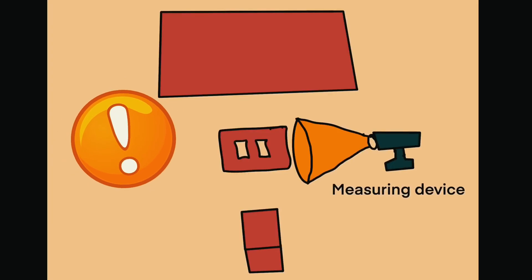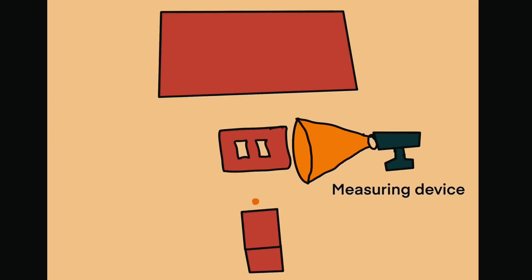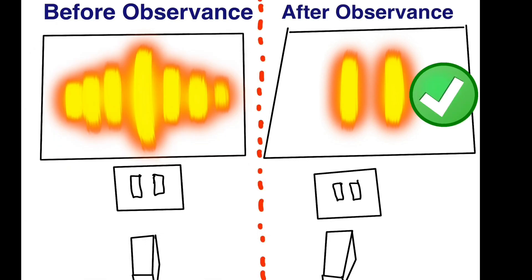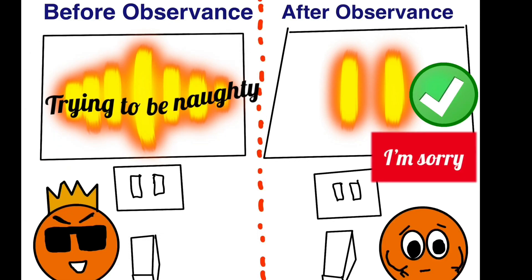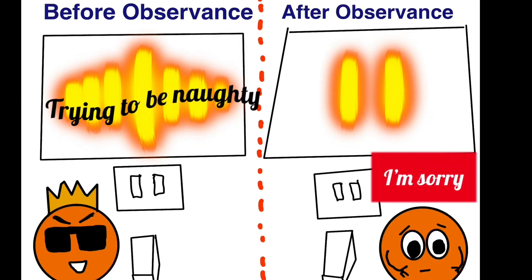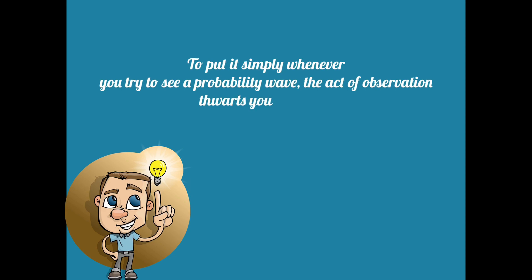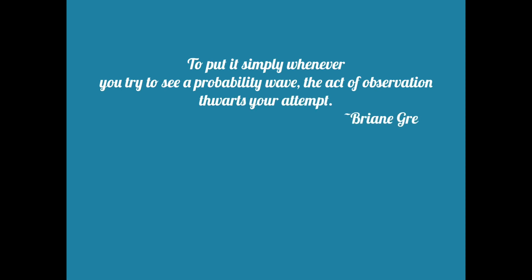What's even more mind-boggling is that when physicists try to put a detector to see which slit the electron went through, the striped interference pattern disappears and two parallel marks appear. It's as if the electrons knew they were being spied on and started behaving like themselves again. To put it simply, whenever you try to see a probability wave, the act of observation thwarts your attempt.